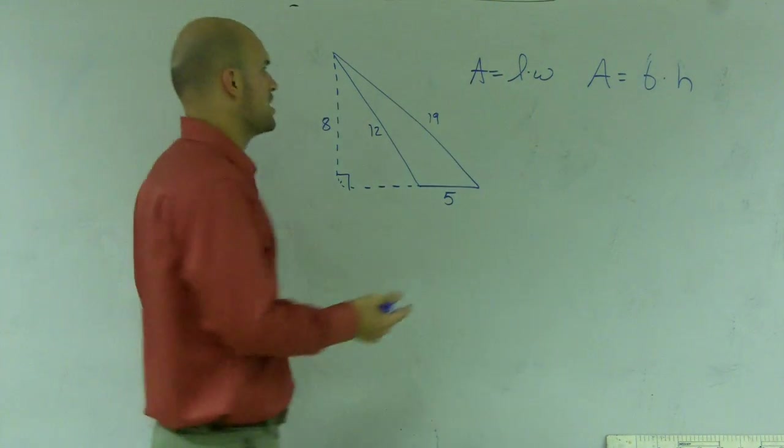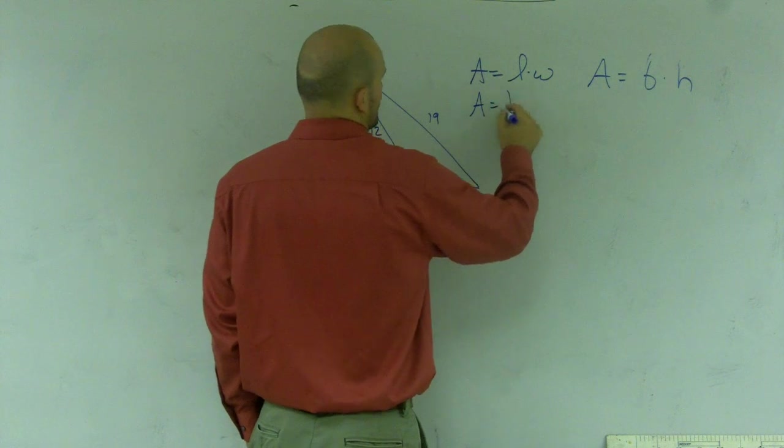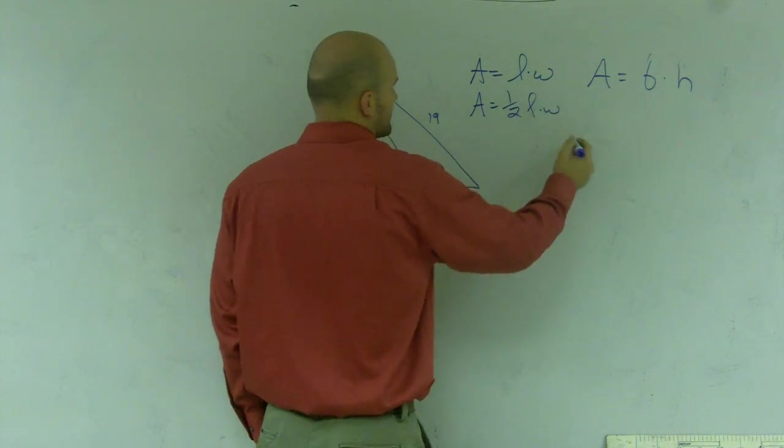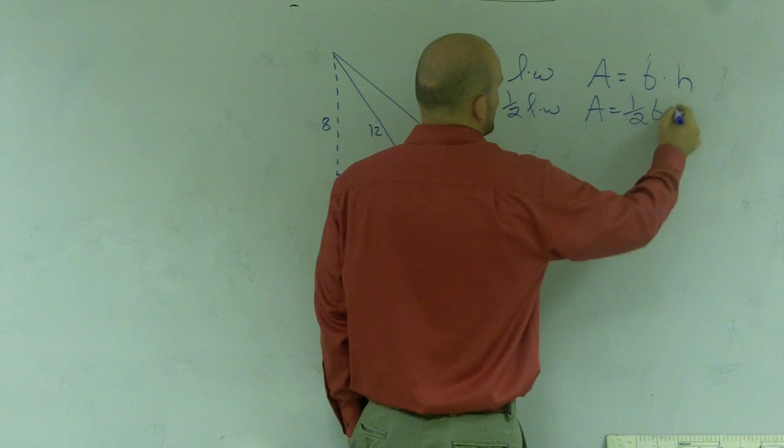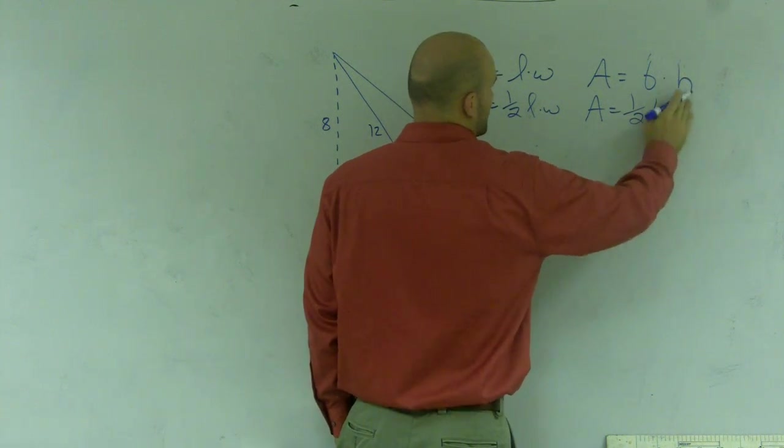what's the area of a triangle? And they say, oh, it's easy. Area equals one-half length times width, or area equals one-half base times height. Wow, that's a horrible H.